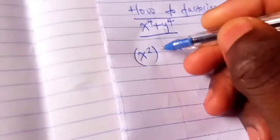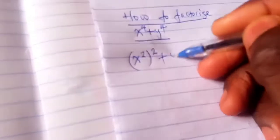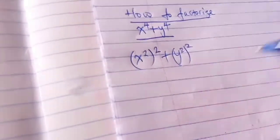I'm going to start by rewriting this as x raised to the power of 2, and I raised that to the second power, added to y raised to the power of 2, raised to the second power.